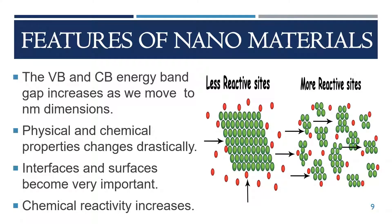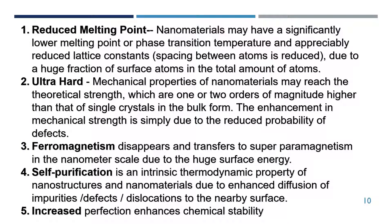Let's look at the features of nanomaterials. As you can see, more surface area gives rise to more reactive sites, increasing chemical reactivity. Nanomaterials have reduced melting points because of the huge fraction of surface atoms relative to total atoms. They are ultra hard — the enhancement in mechanical strength is simply due to the reduced probability of defects. Ferromagnetism disappears and transfers to superparamagnetism at the nanometer scale due to huge surface energy. Self-purification is an intrinsic thermodynamic property due to enhanced diffusion of impurities, defects, and dislocations to nearby surfaces, resulting in increased perfection and enhanced chemical stability.